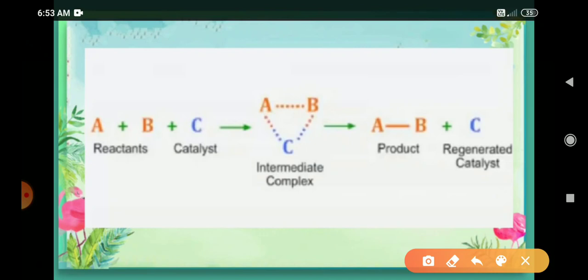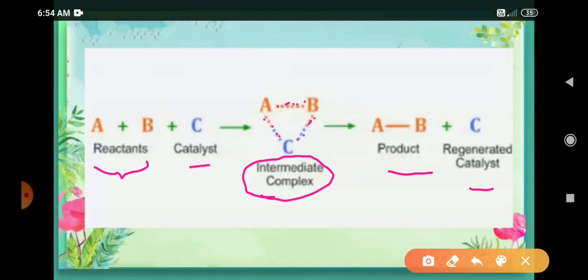According to the intermediate compound formation theory, there is a formation of an intermediate called an intermediate complex. A and B are the reactants and C is the catalyst. The reactant combines with the catalyst — A, B, and C form a temporary bond, and this whole compound is called the intermediate complex.